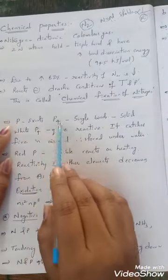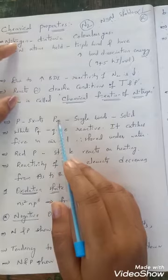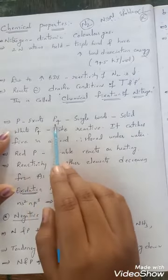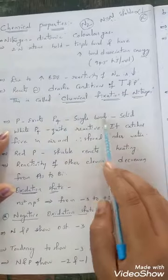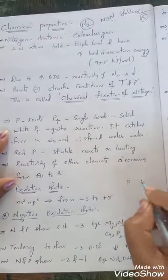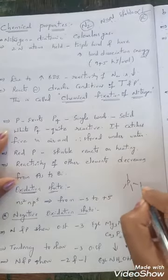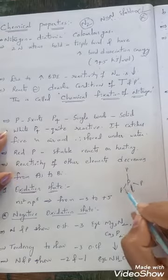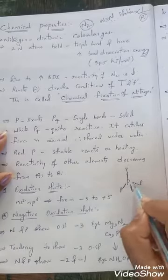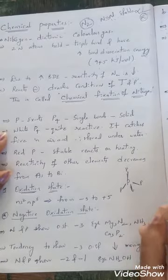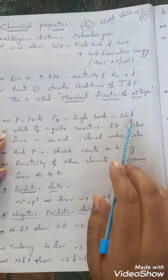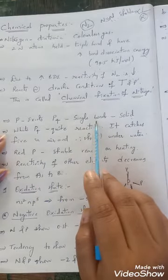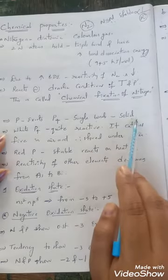Phosphorus exists as P₄, a solid in which each phosphorus atom is connected to three others, and only single bonds are present between all four phosphorus atoms. Among the different allotropic forms of phosphorus, white phosphorus is quite reactive — it catches fire in air and must be stored under water.